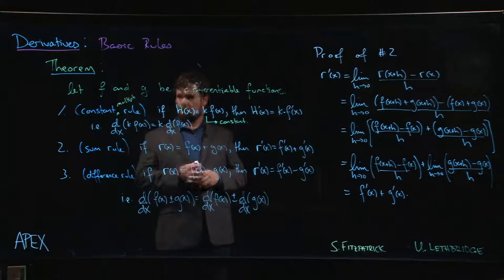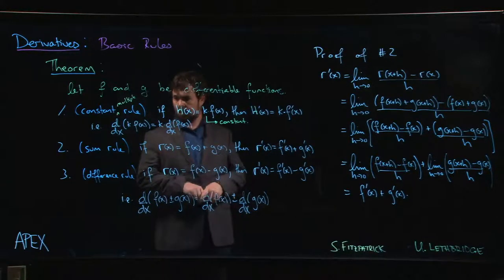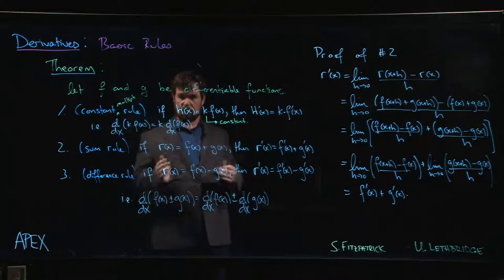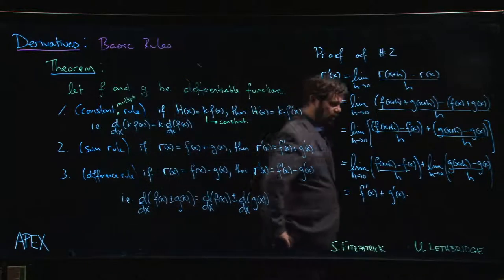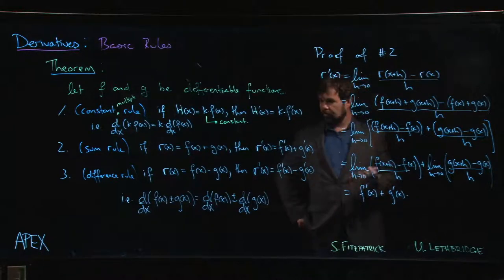So those are the basic rules. They sort of follow the pattern you expect them to follow, right? Just like with limits, you can pull out a constant and if you have a sum you can do it term by term, sum or difference.